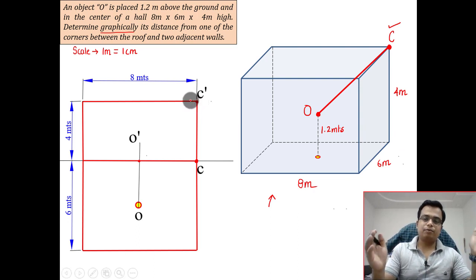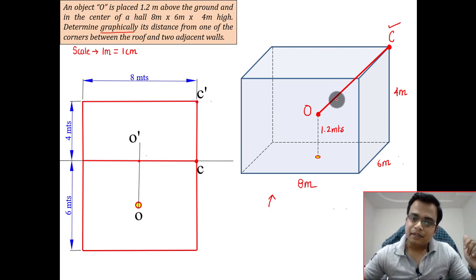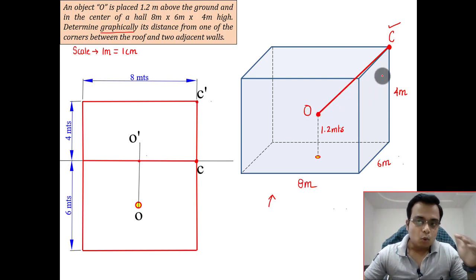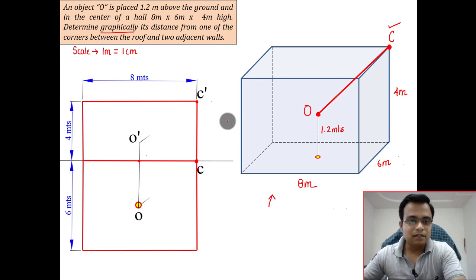As far as this red colored line is concerned, which connects this object with this corner, it's going to appear something like this in the front view and in the top view. Just try to think about this very calmly, very patiently.